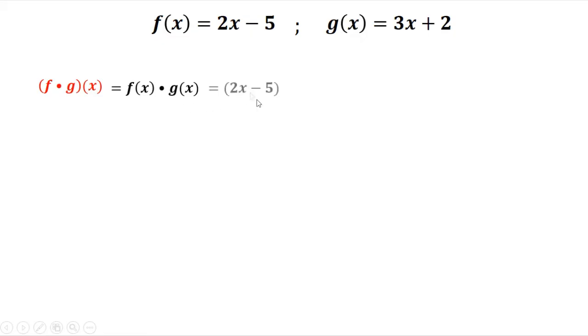So from the given, that's 2x minus 5 times 3x plus 2, then you apply the FOIL method.